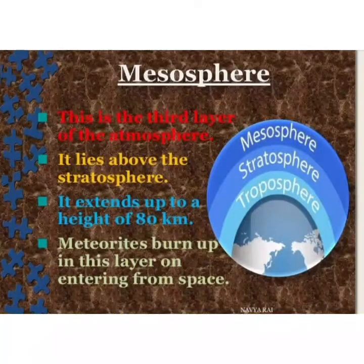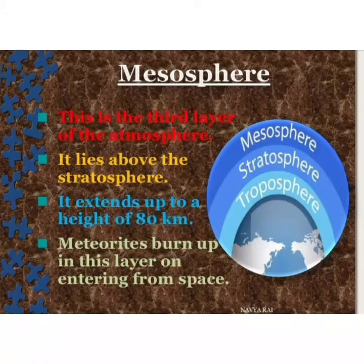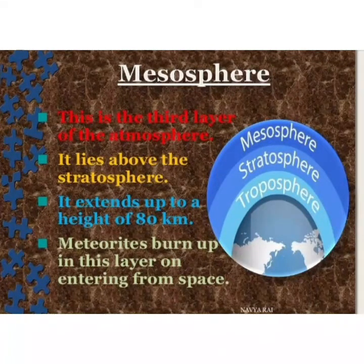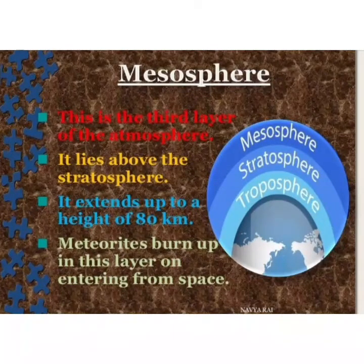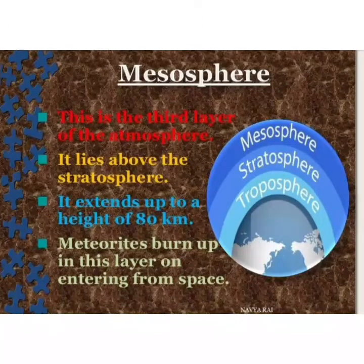Next we have the mesosphere. It extends up to a height of 80 km above the earth's surface. Temperature can go as low as minus 90 degrees Celsius. Meteorites burn up in this layer as they enter from space.